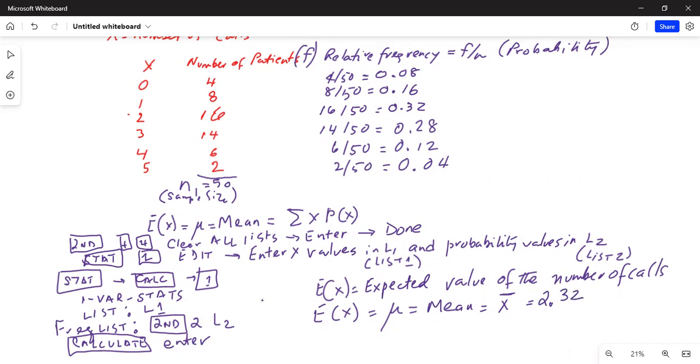What does it mean? On the average, out of 50 patients, the nurse can expect to receive 2.32 calls in a shift.